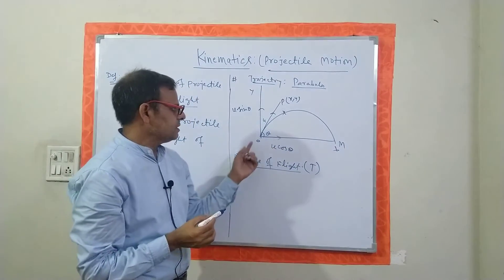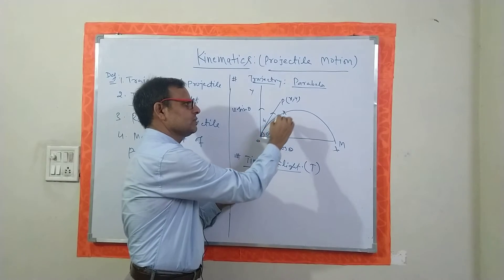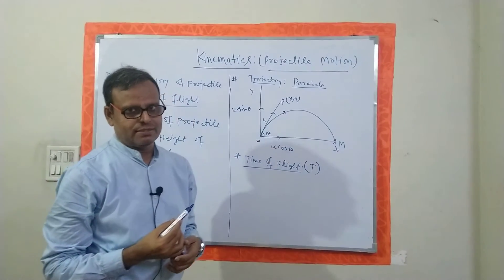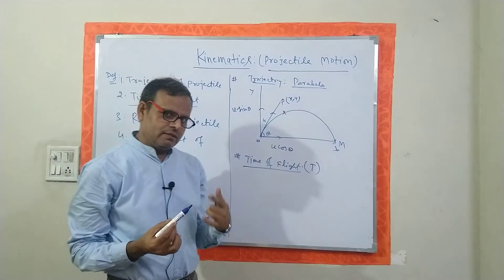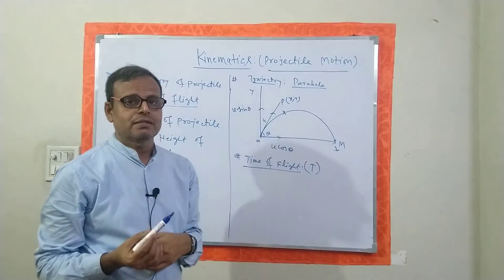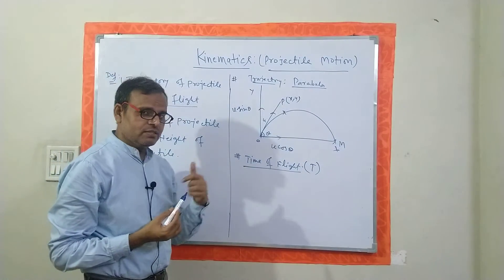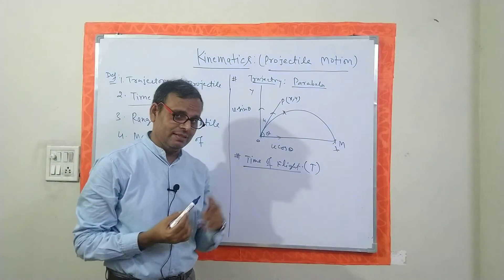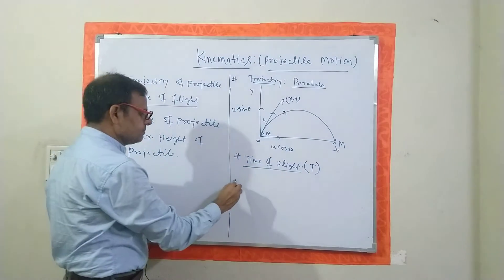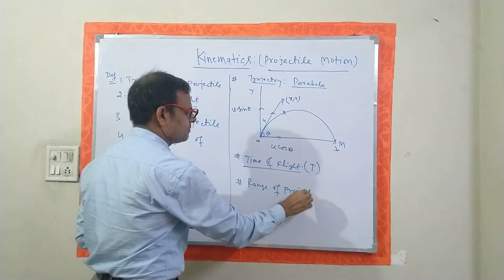The time taken to travel from O along this path to reach point M — that is the time of flight. The formula for time of flight will be explained in my derivation series program. In this definition series program, the definition of time of flight is: the time during which the projectile lives in the air.